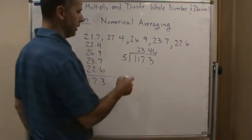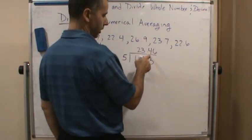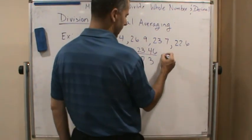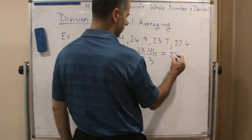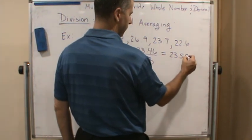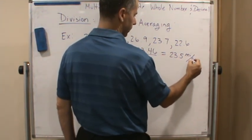Now, they want us to round to the nearest tenth, right? The nearest tenth. So that's going to be equal to 23.5 miles per gallon.